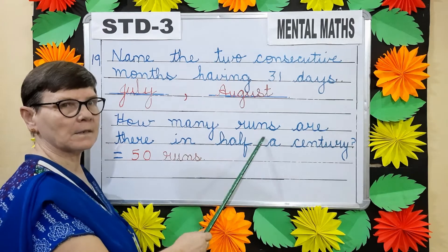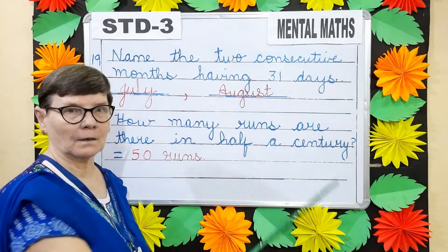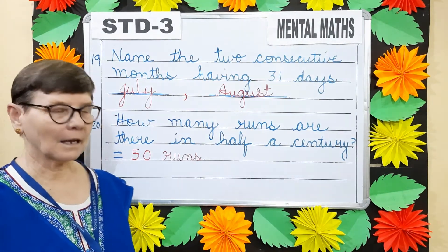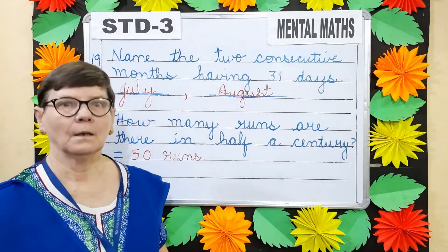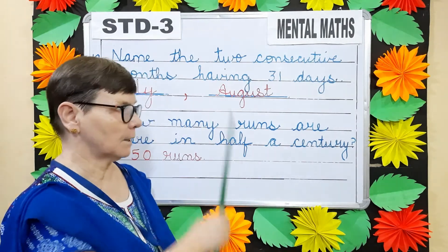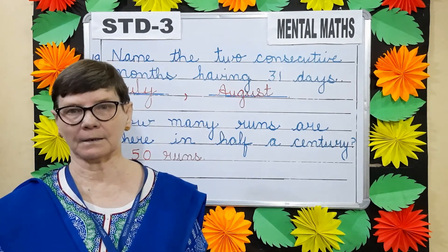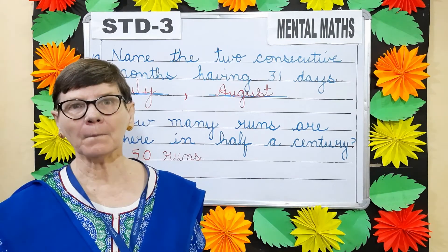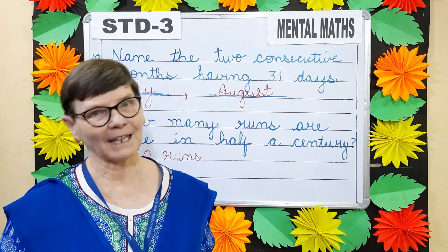How many runs are there in half a century? I'm sure all of you will give me this answer. Yes — it's 50 runs. Now children, the worksheets related to this topic will be uploaded on the school website. Parents, kindly go through them and help your child to do the work given. Thank you.